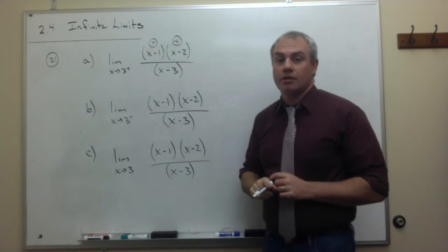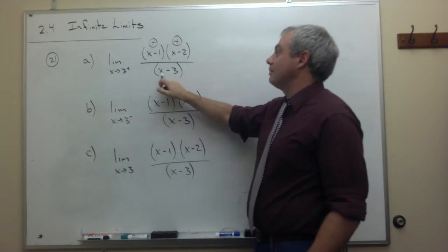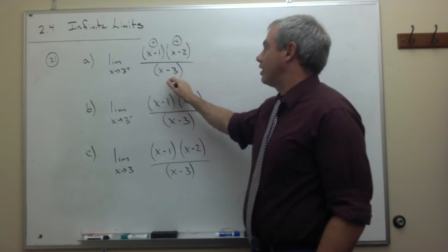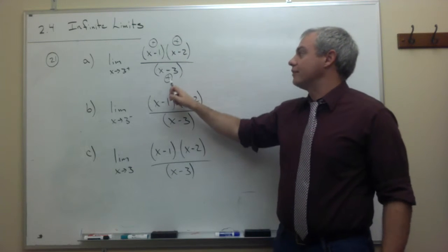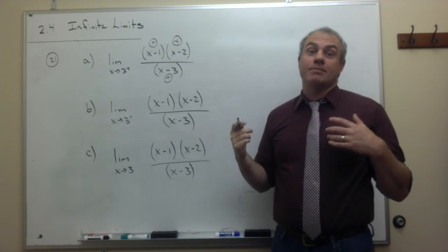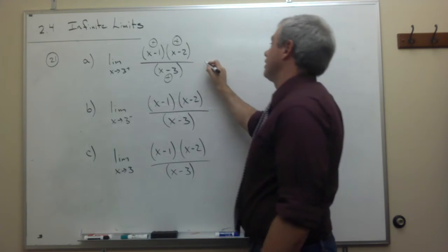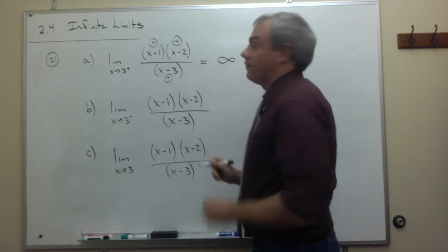And if I take something just slightly bigger than 3 and subtract 3, I get something that is positive. So, I get a positive times a positive divided by a positive. That's positive, so we know that this limit must be positive infinity.